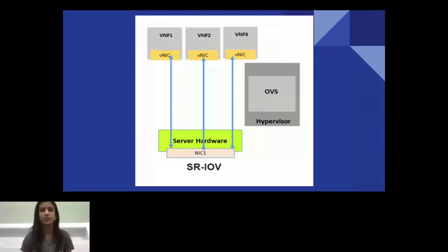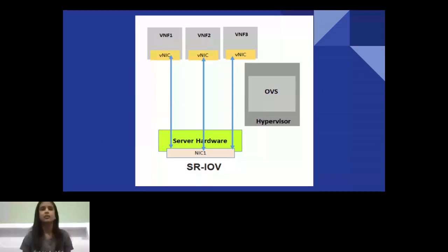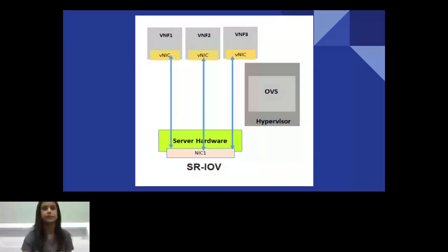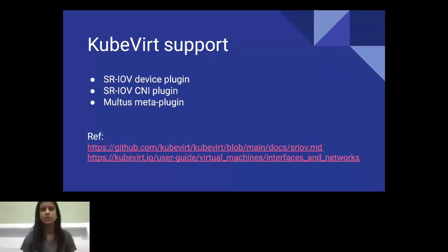This diagram shows what SR-IOV achieves: there is a single NIC card, and on the hypervisor side there is an Open vSwitch at the software layer. SR-IOV provides direct DMA access to VNF applications by exposing each virtual function as an independent vNIC to the VM running your application. This bypasses the kernel on your hypervisor and gives the VM direct access to those resources.